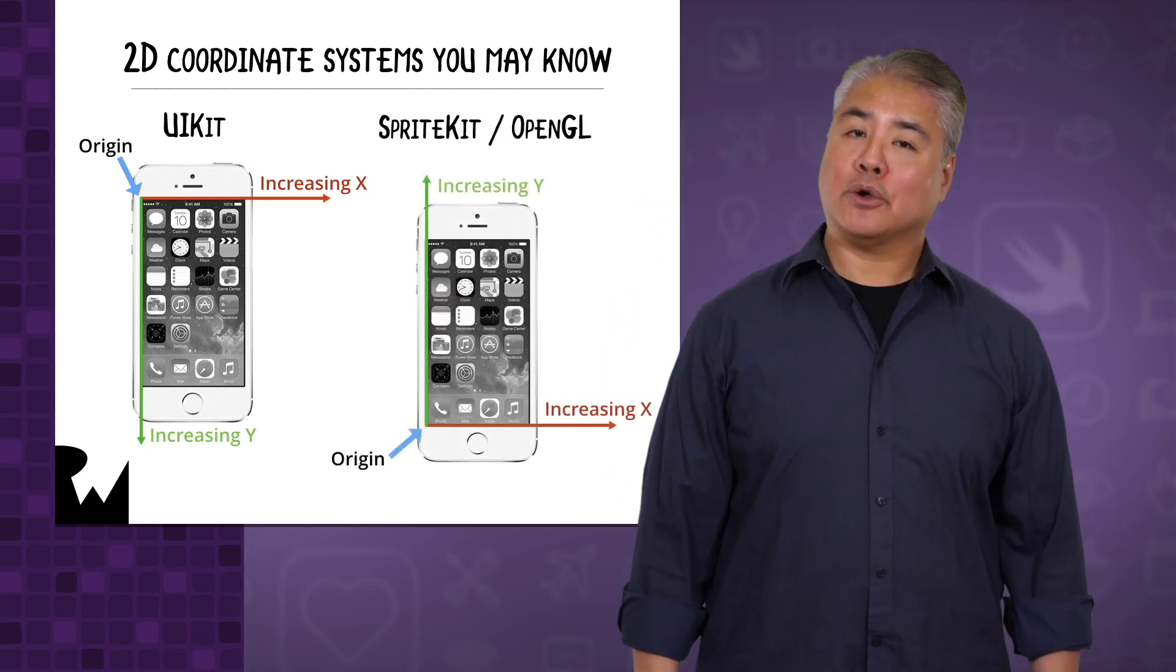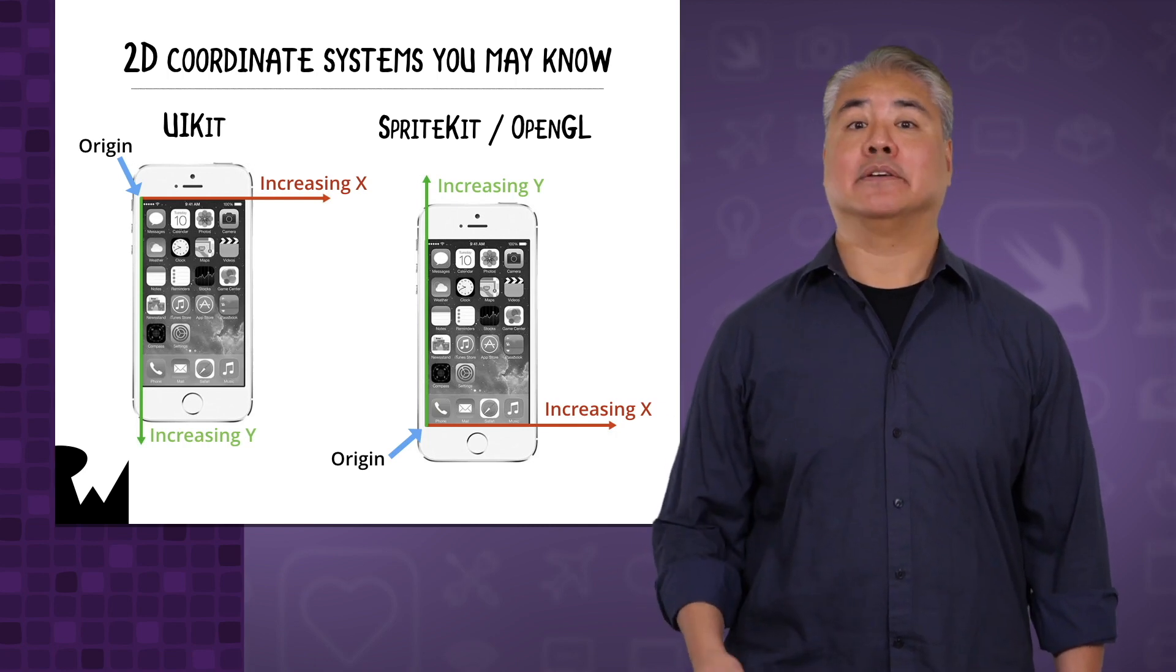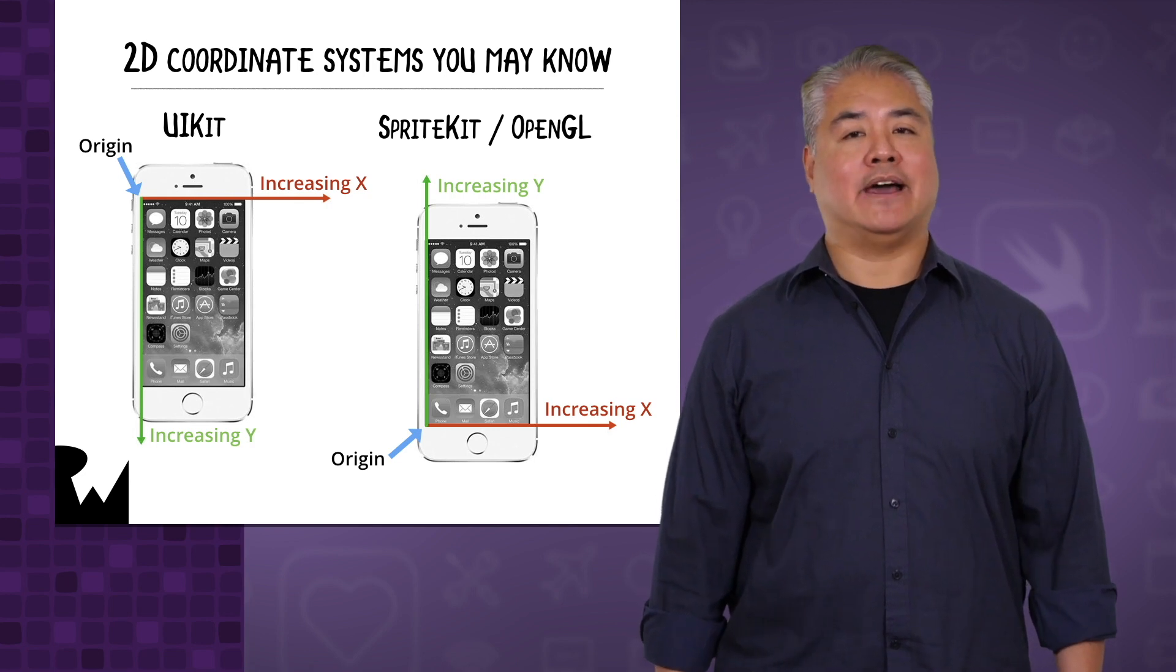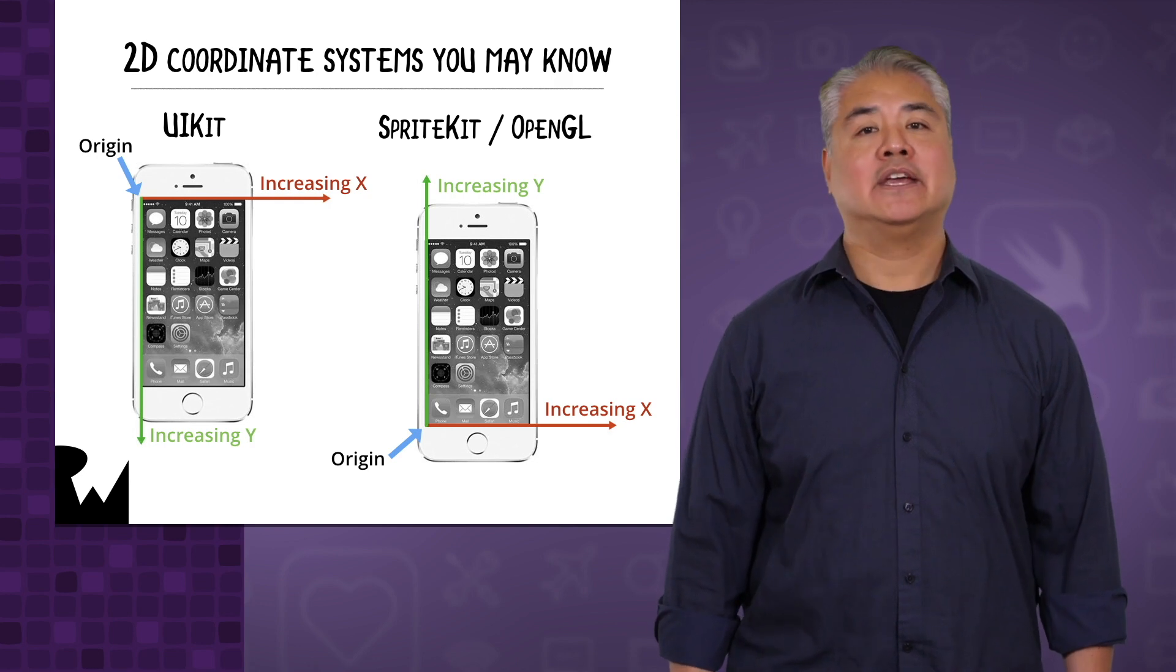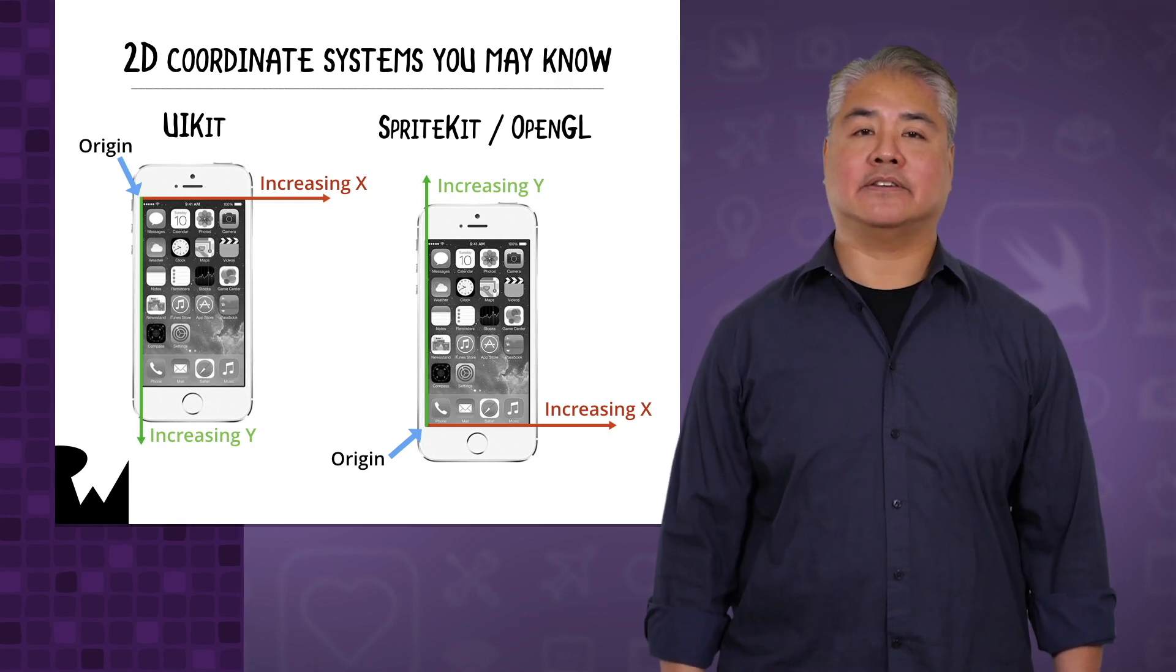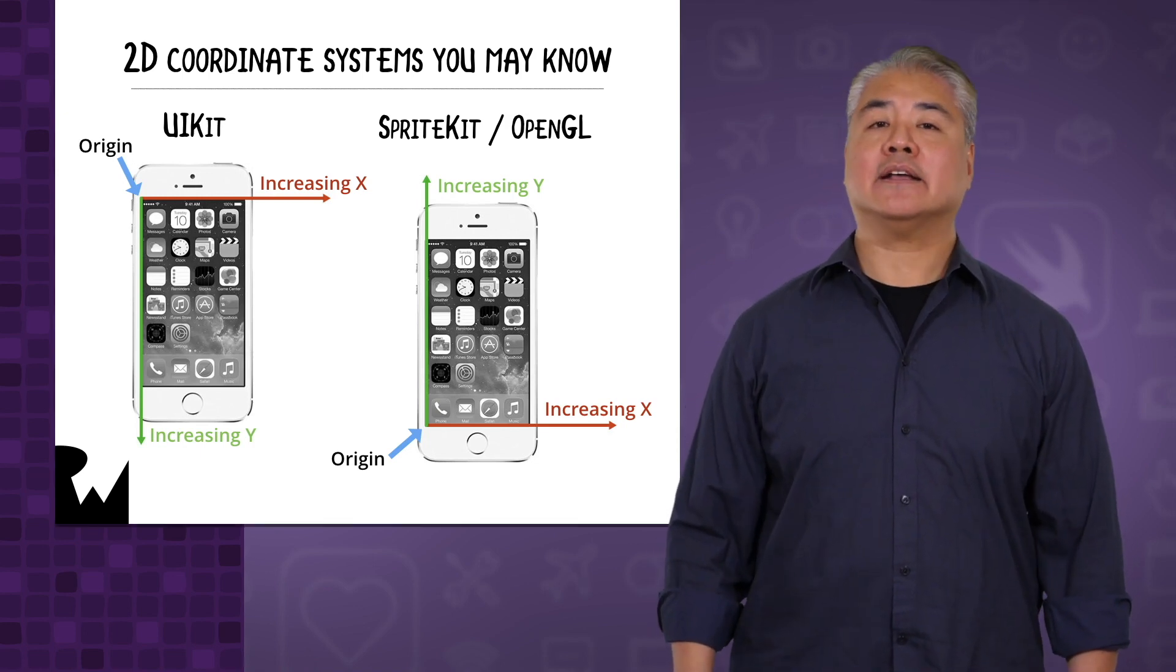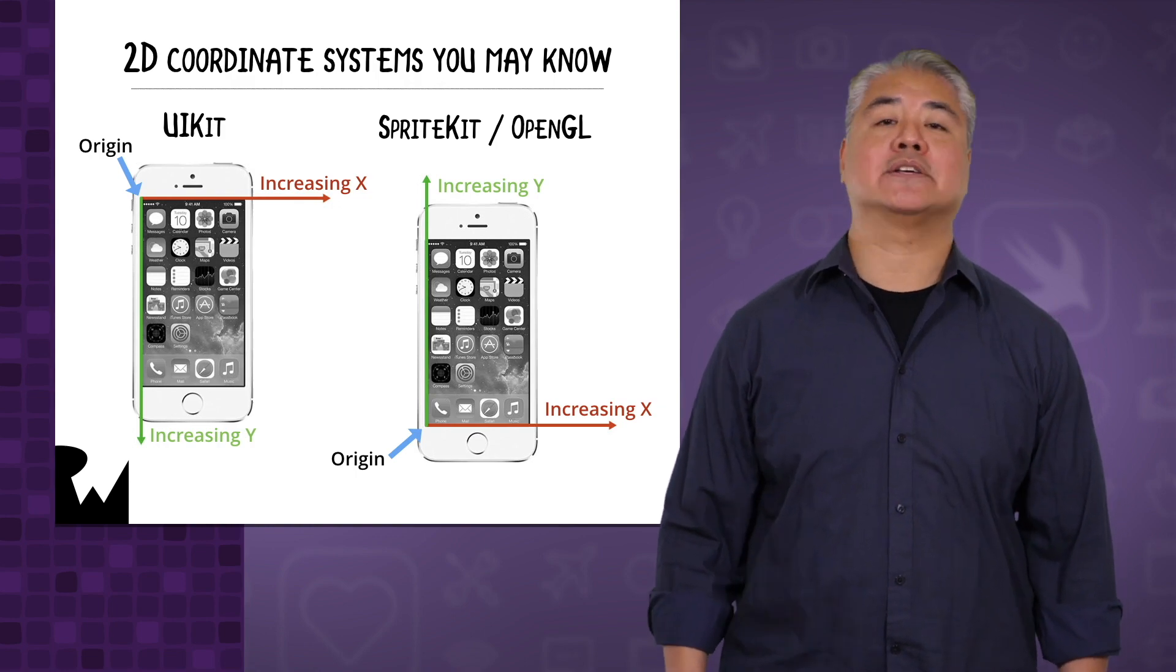If you've done game programming or graphics programming using OpenGL or something based on it, say SpriteKit, the origin follows the convention used in math, and it's at the bottom left corner of the screen, window, or canvas. Again, the X and Y axes run parallel to the edges. In this setup, X still increases as you go right, but this time Y increases as you go up.